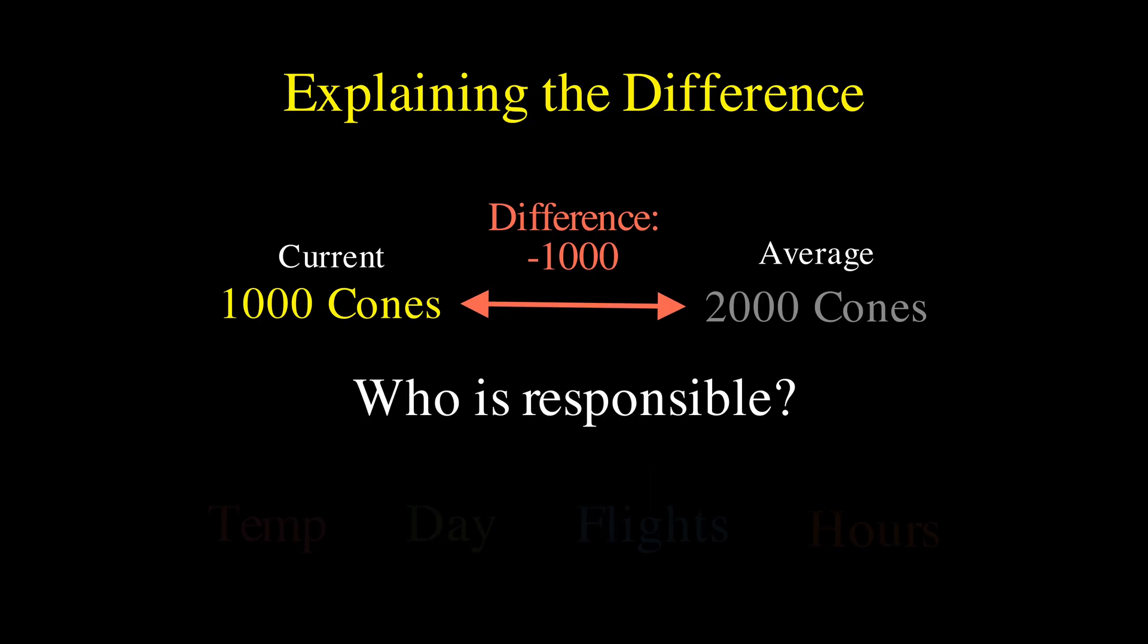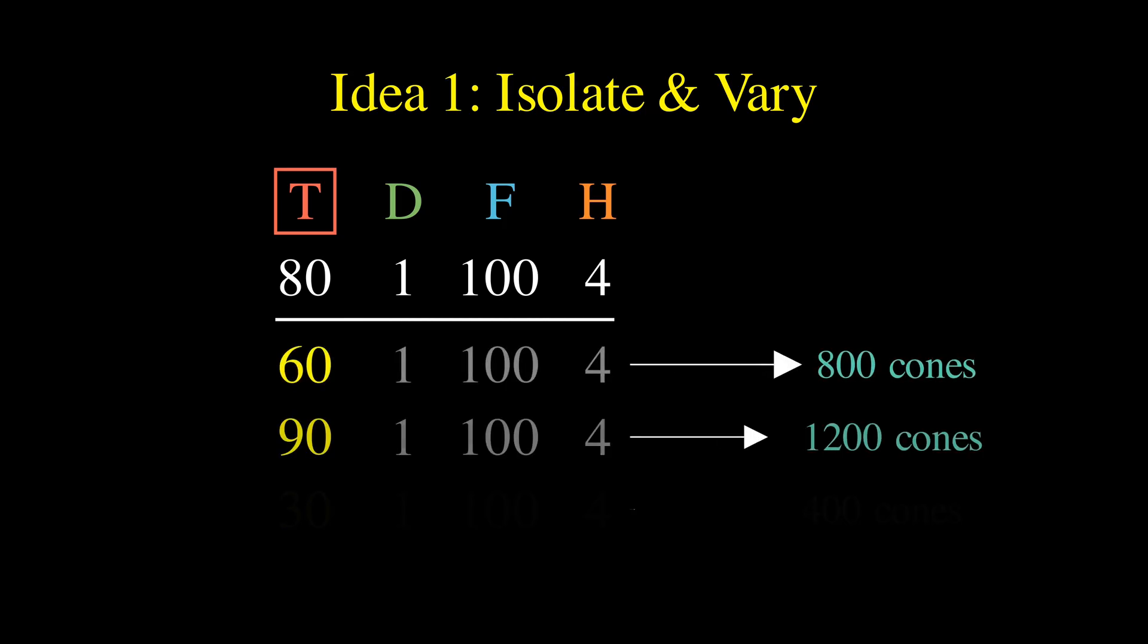How much of that negative 1000 comes from each feature? A naive approach might be to just take your specific day, change one feature, say the temperature, and see how the prediction changes. We could do this repeatedly and average the results.